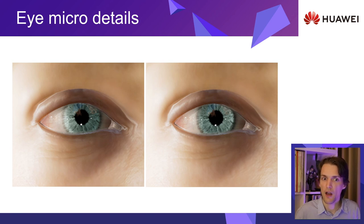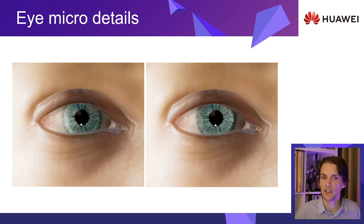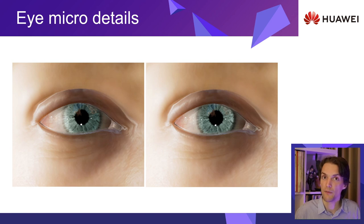Eyes, for example, are one of the most information-rich factors of human interaction. We spend an incredible amount of time looking into each other's eyes, and as such any missing details will unconsciously be made obvious.